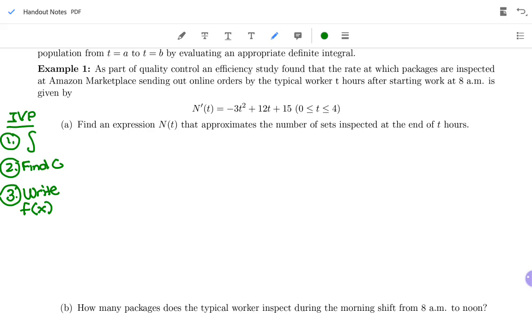As part of quality control, an efficiency study found that the rate at which packages are inspected at Amazon Marketplace sending out online orders by a typical worker t hours after starting work at 8 a.m. is given by this N'(t). What's important is that I'm given a rate, basically a derivative. Remember, derivatives are the instantaneous rate of change. I'm given the derivative and asked for the total net change. How many total packages do they inspect? This is how fast they're inspecting them. The time is in hours, and 8 a.m. is when they start. So 8 a.m. is time zero, they worked zero hours when they first got there.